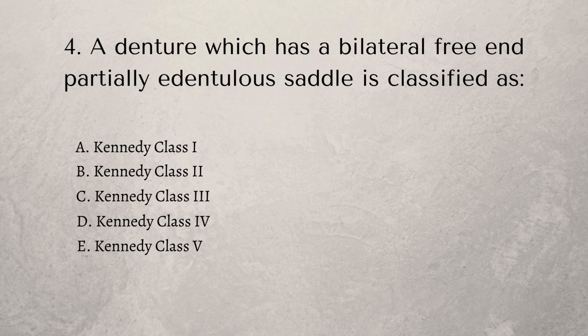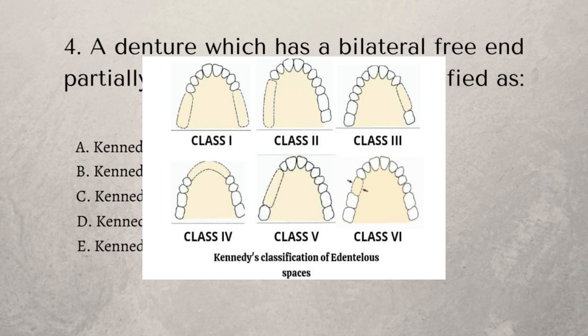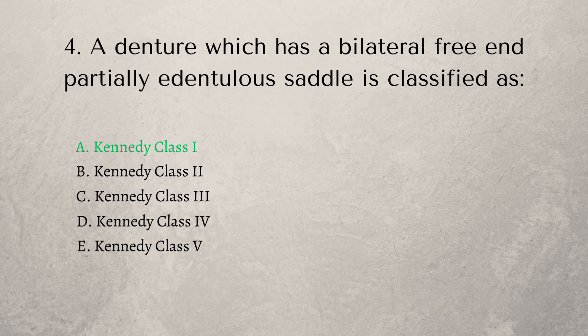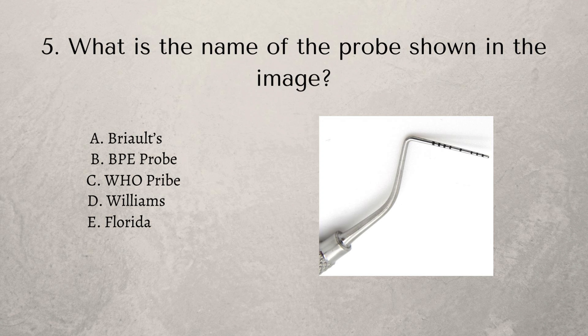A denture that has a bilateral free end partially edentulous saddle is classified as Kennedy class one, two, three, four, or five? This question comes up every time, especially in the MFDS part one or the primary care diploma — these are easy points you should know like the back of your hand. A bilateral free end saddle is Kennedy class one. Class two is a unilateral free end saddle, class three a bounded saddle, and class four an anterior saddle. There's a picture here so you can see what they look like — these are questions you should be getting right every time.